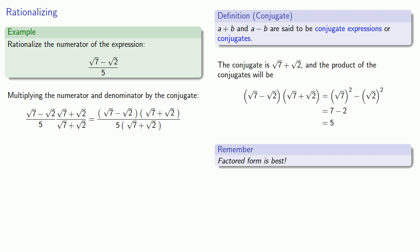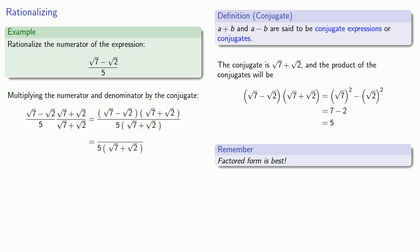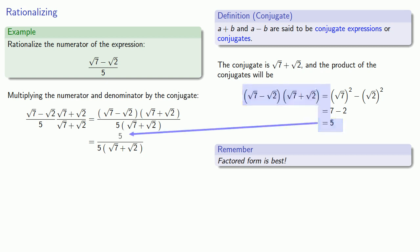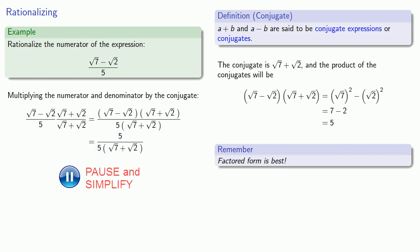So we'll leave our denominator as it is. The product of the factors in the numerator is equal to 5, so we'll write that. And now our numerator and denominator have a common factor of 5, so we can remove it, giving us our final answer — which has a rational numerator.